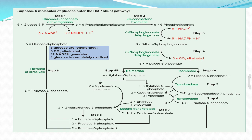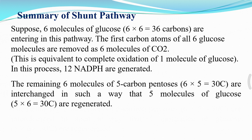You can observe here the oxidative and non-oxidative phases. In summary of the shunt pathway: when 6 molecules of glucose enter this pathway, the first carbon of all 6 glucose molecules is removed as 6 molecules of carbon dioxide — equivalent to the complete oxidation of 1 molecule of glucose. In this process, 12 NADPH are generated. The remaining 6 molecules of 5-carbon pentoses are interchanged and 5 molecules of glucose are regenerated.